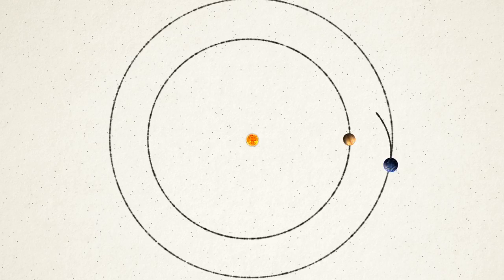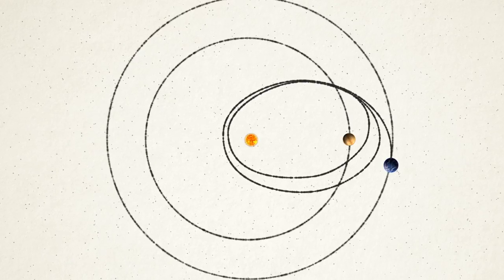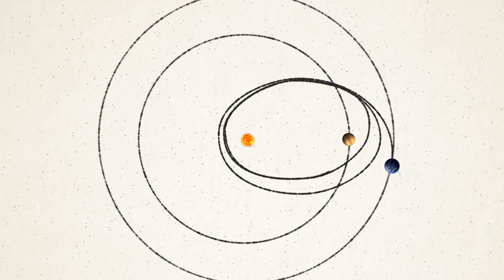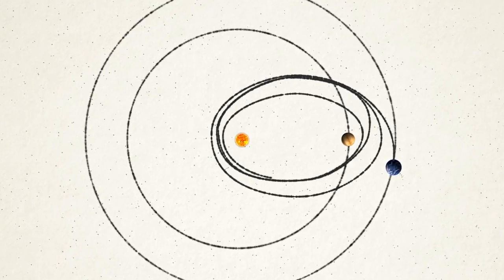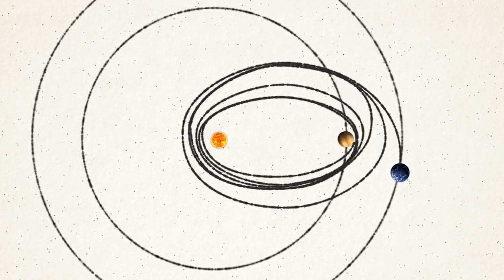Since Parker Solar Probe plans to fly past the Sun, it doesn't need to cancel out all of Earth's sideways speed, but it does need to remove 53,000 miles per hour of it. That's why it's using one of the most powerful rockets available, and additional gravity assists from Venus, over a period of several years.